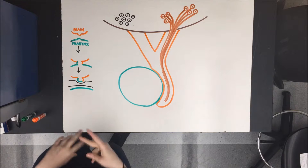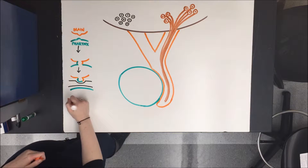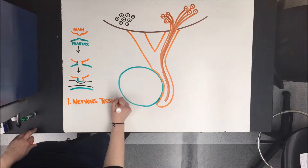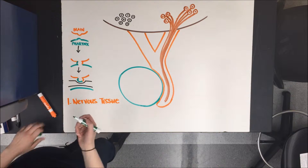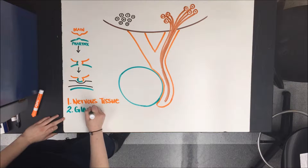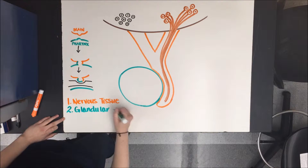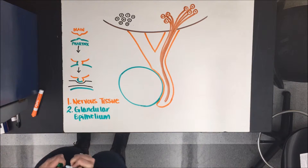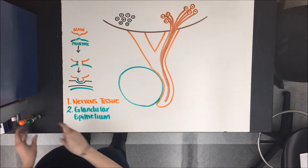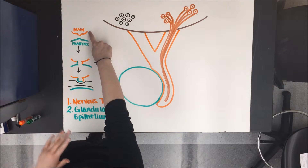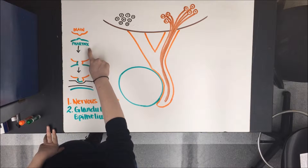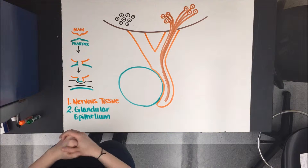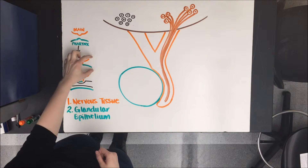The pituitary gland actually consists of two tissue types. The first is nervous tissue, which I've drawn here in orange, and the second is glandular epithelium. In the developing organism we have the brain in orange — that's the nervous tissue — and the developing pharynx in green, which is the epithelium. They're actually in very close proximity in the developing organism and they fuse together, as I've drawn here.